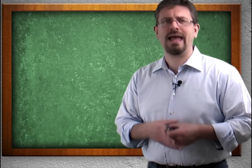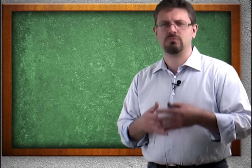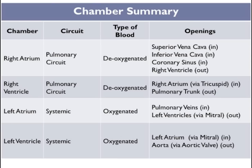Let's take a look quickly at the chamber summary — this is the stuff you must know for your exams. Right atrium: pulmonary circuit, deoxygenated blood, openings in are the superior and inferior vena cava and the coronary sinus, out going to the right ventricle. Right ventricle: pulmonary circuit, deoxygenated blood, in from the right atrium through the tricuspid, out to the pulmonary trunk. Left atrium: systemic circuit, oxygenated blood, pulmonary veins in, out to the left ventricle via the mitral valve. Left ventricle: systemic circuit, oxygenated blood, in from the left atrium via the mitral valve, and out through the aorta.